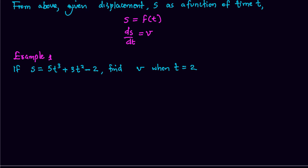Example: if displacement s is equal to 5t cubed plus 3t squared minus 2, find v when t is equal to 2. From the definition we found that ds over dt — differentiating displacement with respect to time — is equal to the velocity v, which is equal to 15t squared plus 6t.